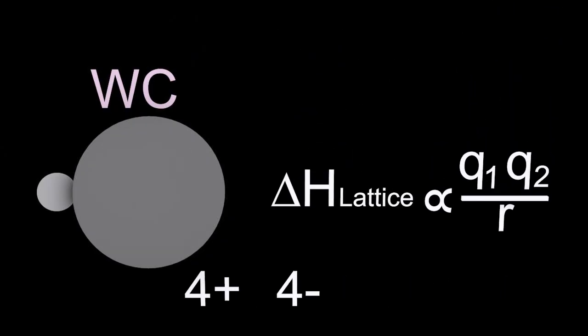So consider tungsten carbide. This is just a pair of the ions. It's actually a huge crystal, supposedly. Why does this have one of the highest lattice energies out there? Well, if we consider this equation, it might help to illuminate that. It's not IB, but I find it helpful.